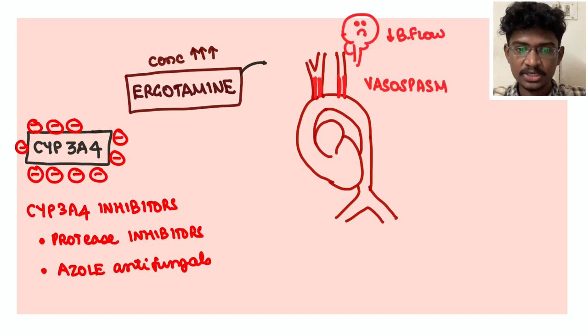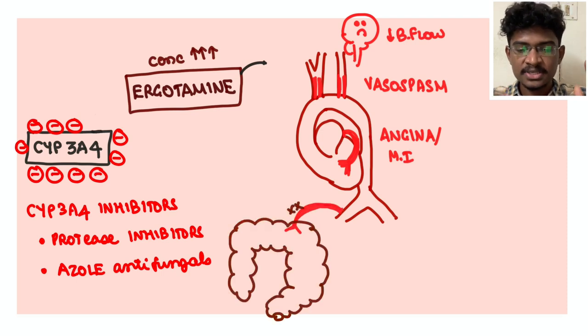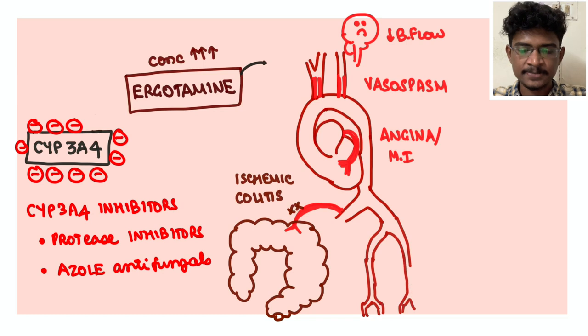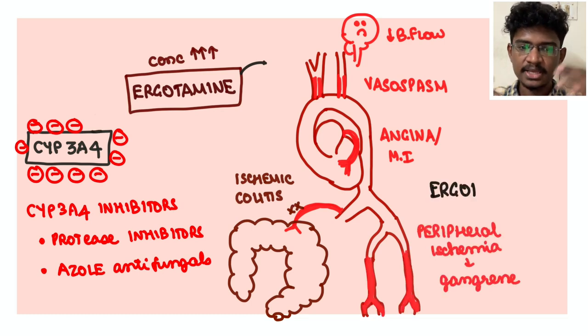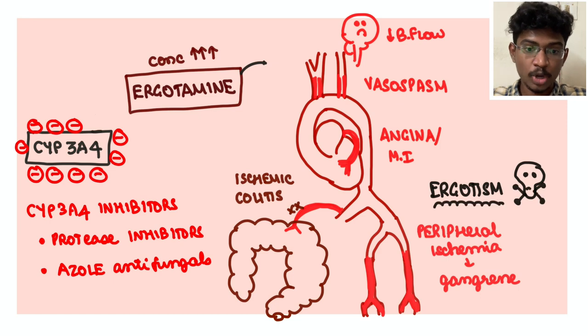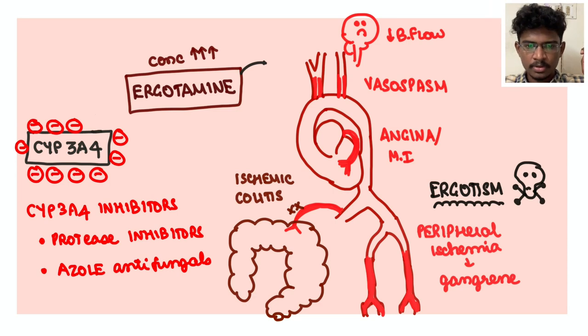And same happens in the heart coronary blood vessels resulting in angina and myocardial infarction. Same happens in the large intestine resulting in ischemic colitis. And this same can also happen suddenly to the lower extremities or extremities resulting in ischemia and gangrene, sudden onset gangrene. So this is ergotism.